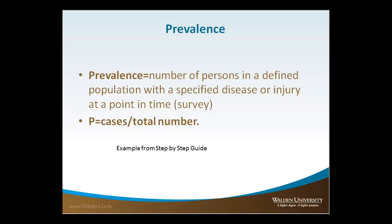Prevalence is the total number of persons in a defined population with a specific disease or injury. A good example would be heart attacks and heart disease: the total number of heart attacks in a year would be the incidence, while the total number of people living who have experienced a heart attack would be the prevalence.